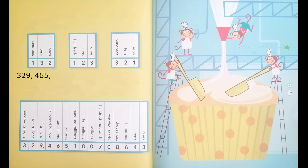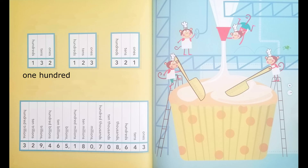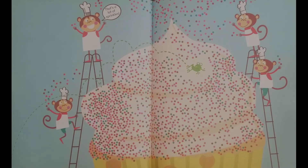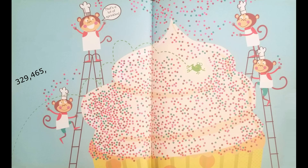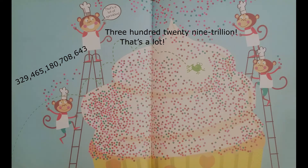Place value is what enables us to write huge numbers like 329,465,180,708,643 using just ten different digits. That's a lot. The end.